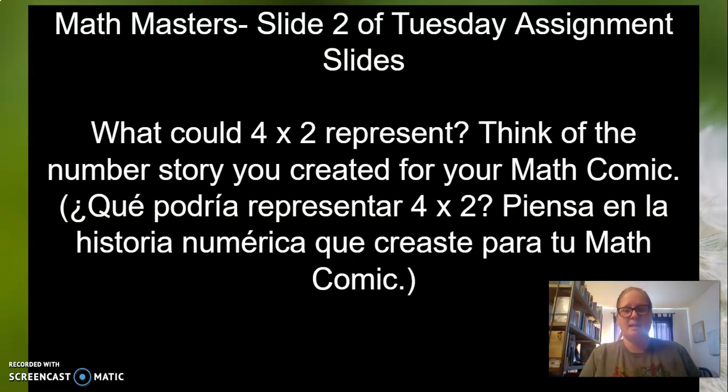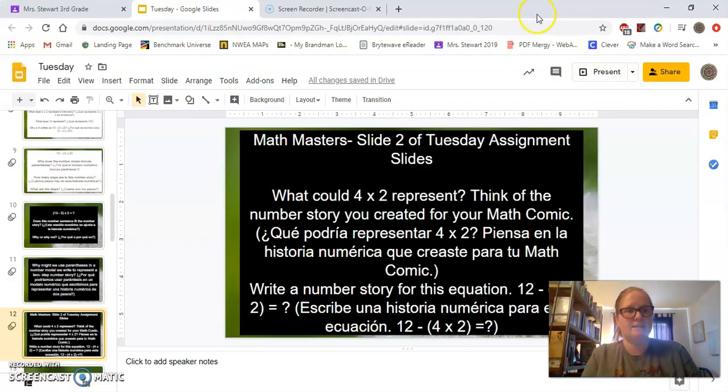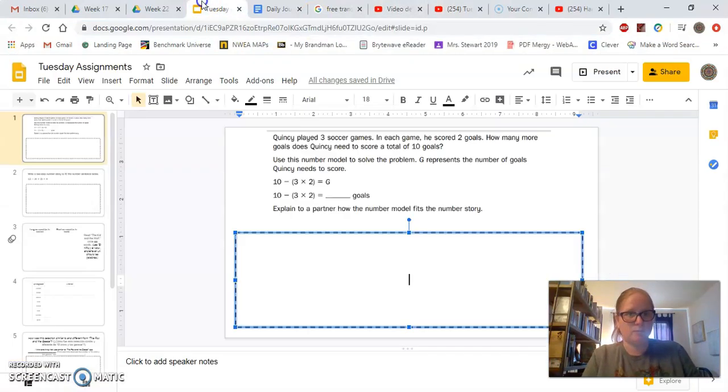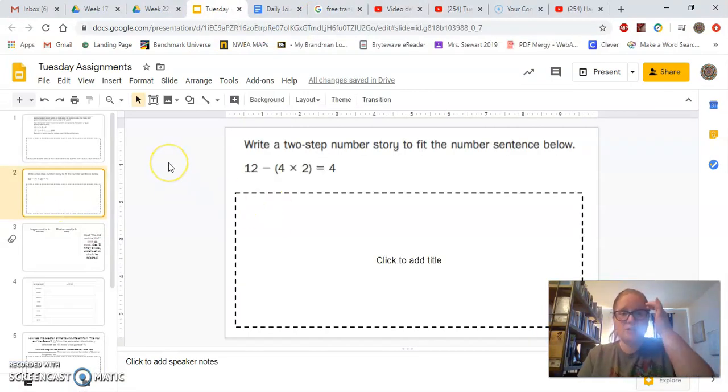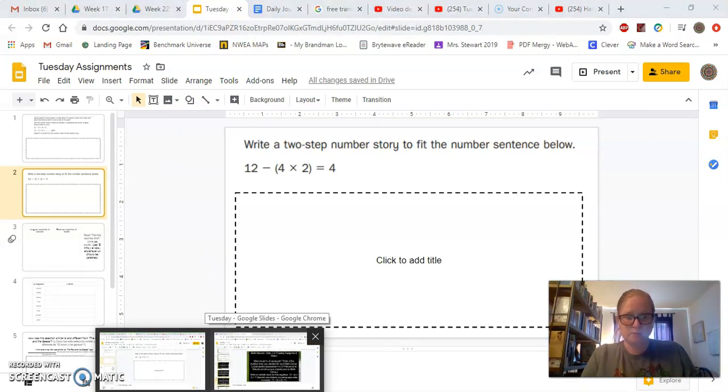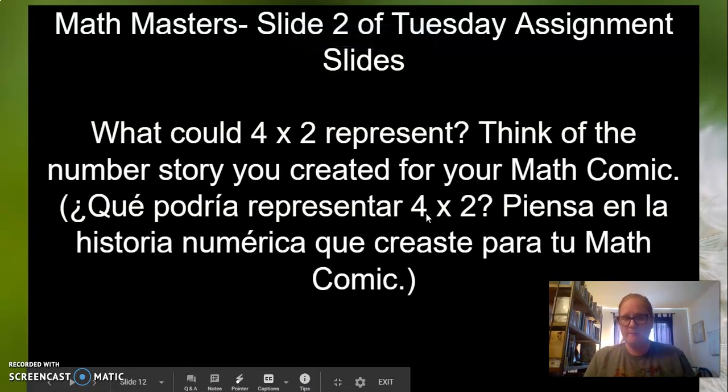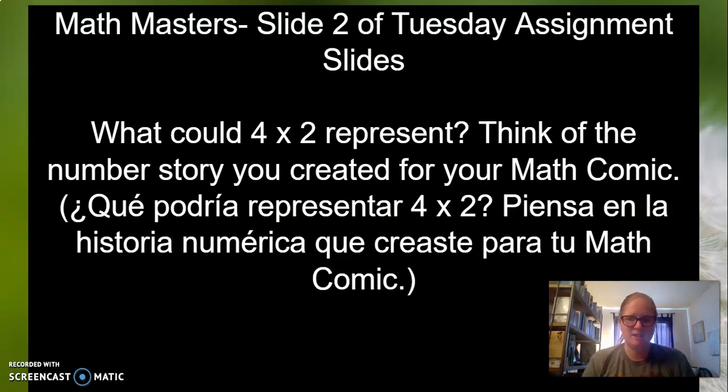Now, slide two of your Tuesday assignment. What could four times two represent? Think of the number story you created with your math comic. In this problem, this slide two, you are creating the number story. Let me go back and see what it was for you guys. It is, write a two-step number story to fit the number sentence below. Twelve minus four times two equals four. So what you have to do is first figure out what could four times two represent, and remember we want that each word.